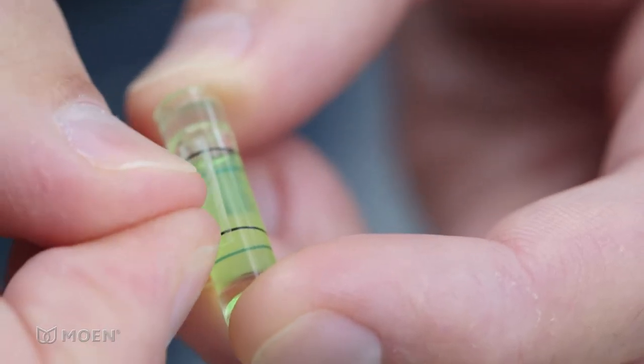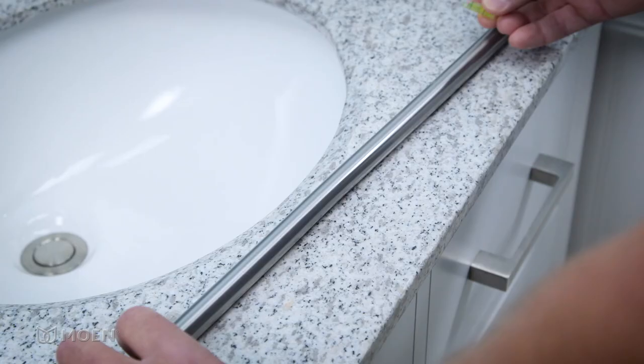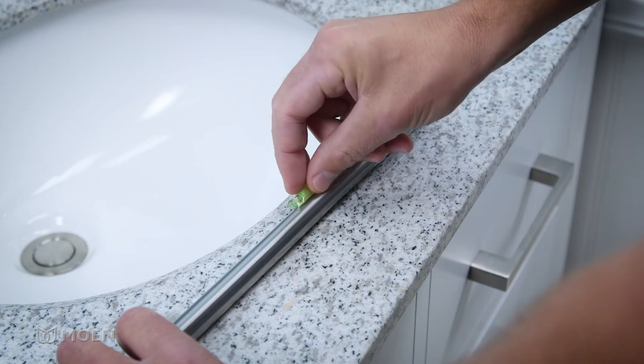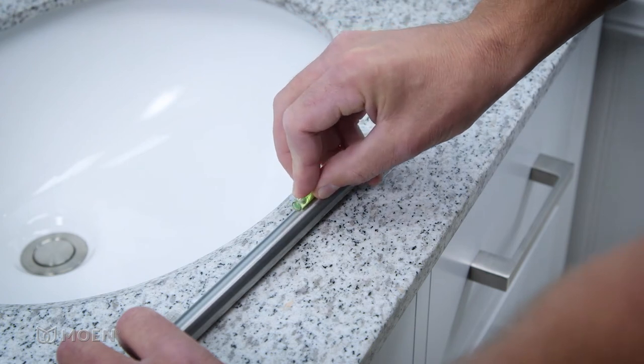Gently remove the film backing from the adhesive. Position the level adhesive side down on the center of the bar. Press firmly and evenly so the level sticks to the bar.